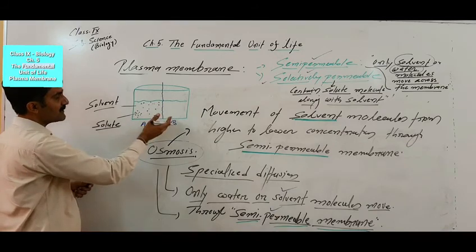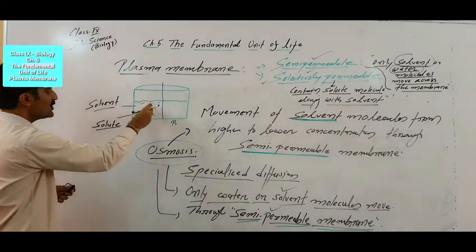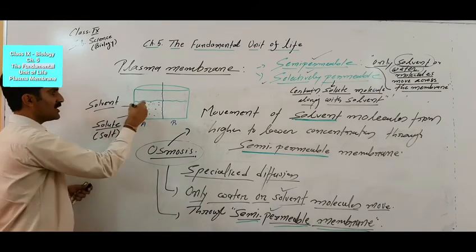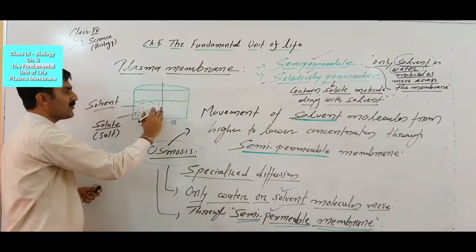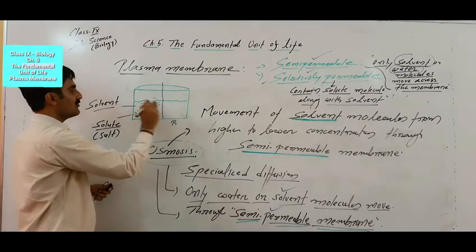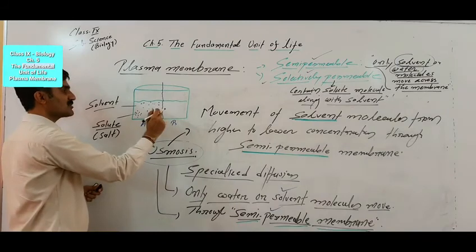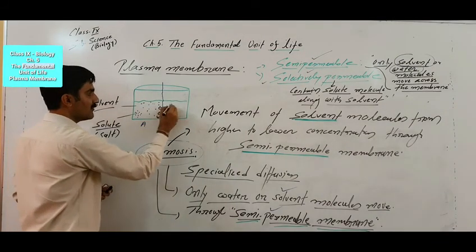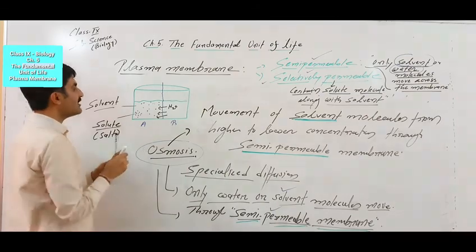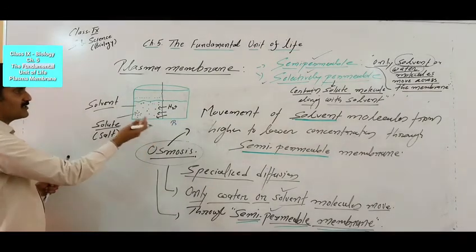After some time, the water level inside part A — which had the solute — will start increasing, as solvent moves from higher to lower concentration across the semi-permeable membrane. This demonstrates osmosis. Similarly, if we take a petri dish filled with water and put some dry raisins in it, the raisins act as semi-permeable membranes. The solvent outside has higher concentration than inside the raisin, so water moves inside the raisin.